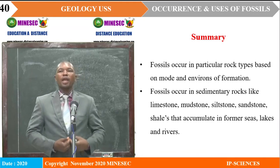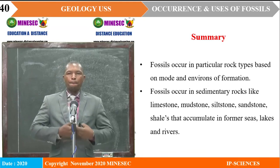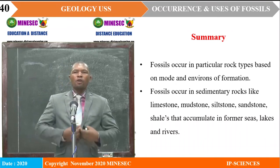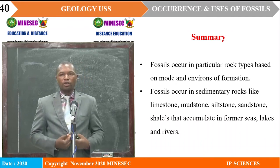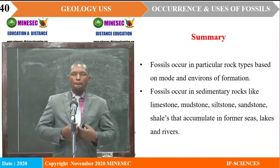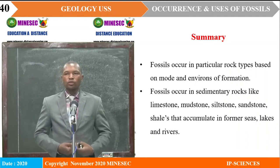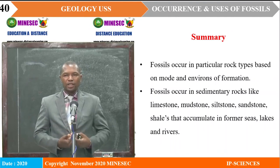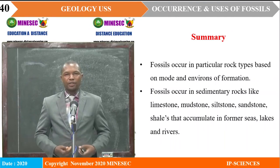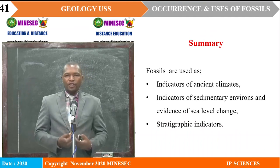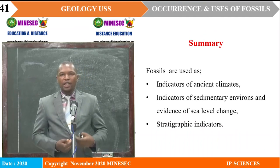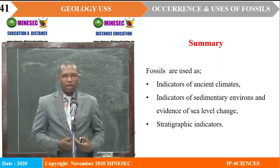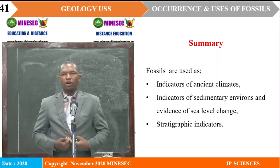In summary: fossils occur in particular rock types based on mode and environment of formation. Fossils occur in sedimentary rocks like limestone, mudstone, siltstone, sandstone, and shales that accumulate in former seas, lakes, and rivers. Fossils are used as indicators of ancient climate, indicators of sedimentary environments, and as evidence of sea level change.